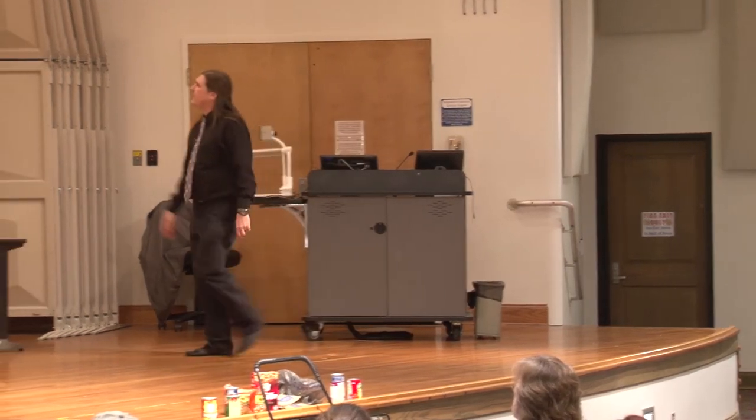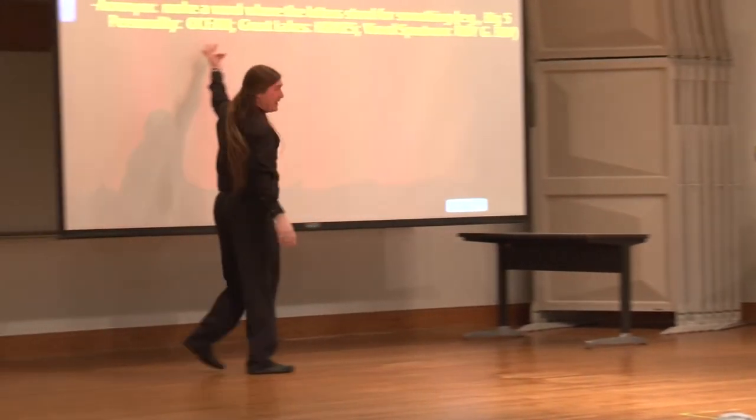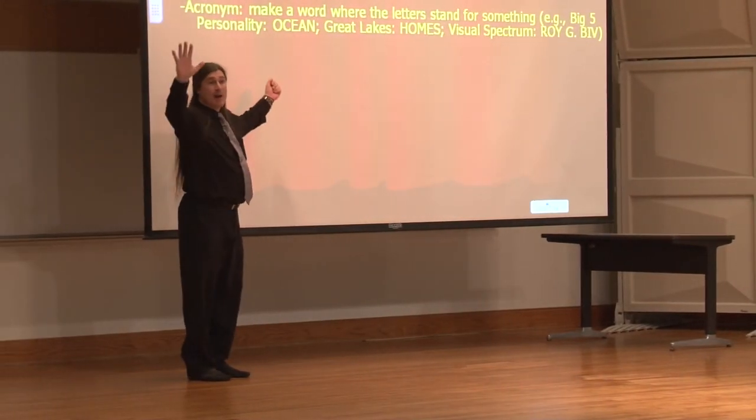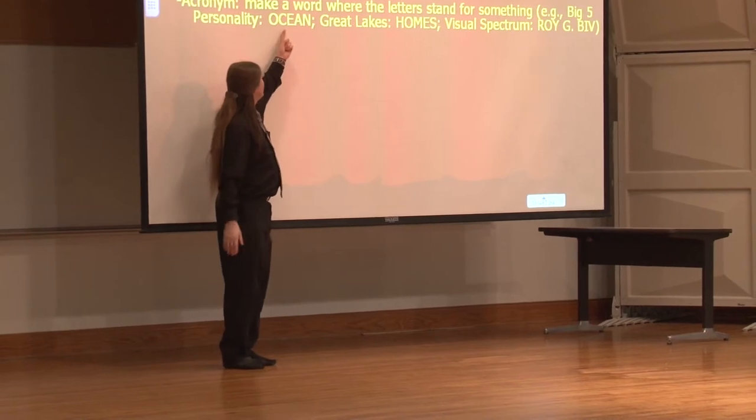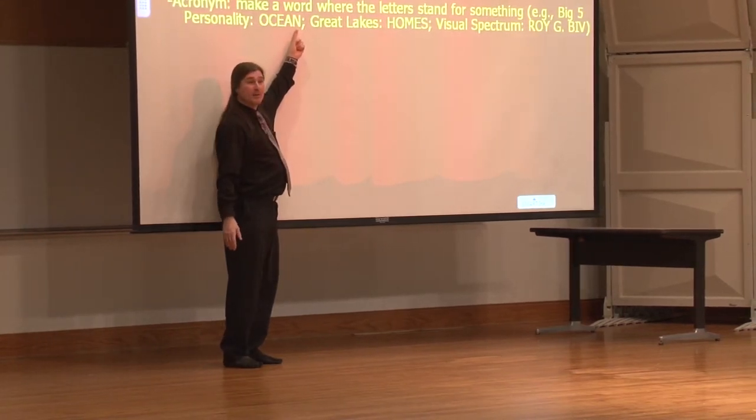I'll use this one real quick for y'all, because we'll do it in the personality chapter. The big five personality, there's five traits: Openness, Conscientiousness, Extroversion, Agreeableness, and Neuroticism. OCEAN.